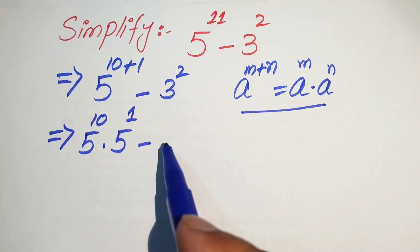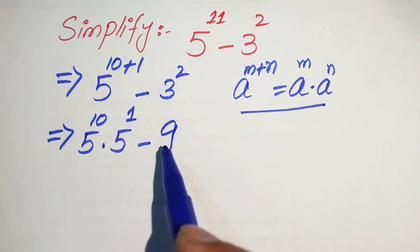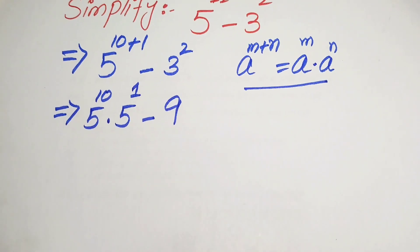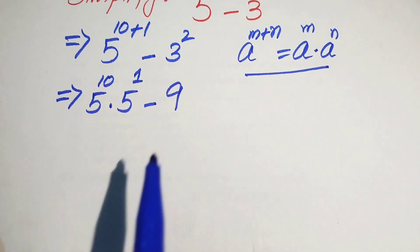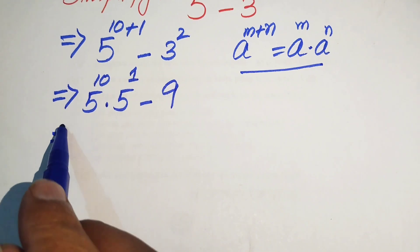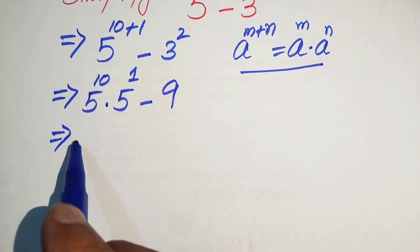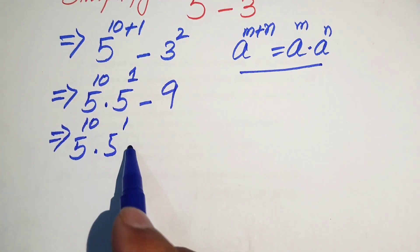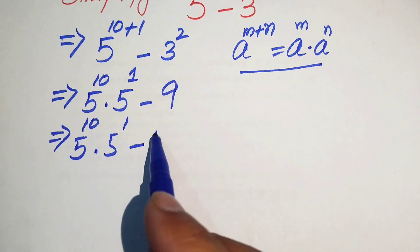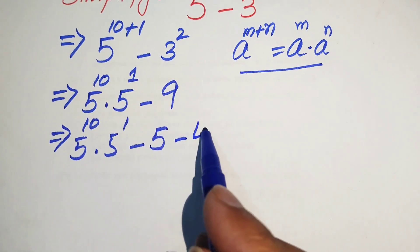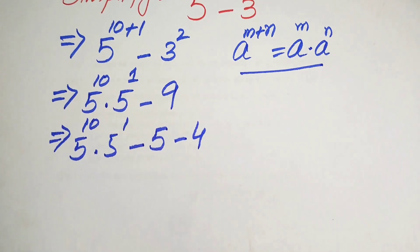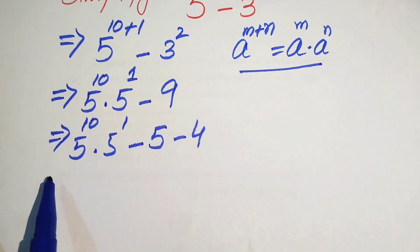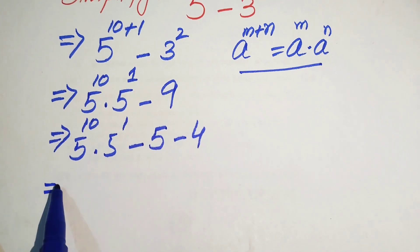We know that 3 squared equals 9. We then rewrite 9 as 5 minus 4, so the expression becomes 5 to the power of 10 into 5 to the power of 1, minus 5 minus 4, because negative 5 minus 4 equals negative 9.